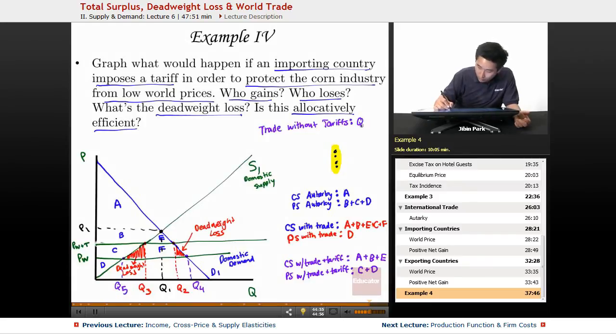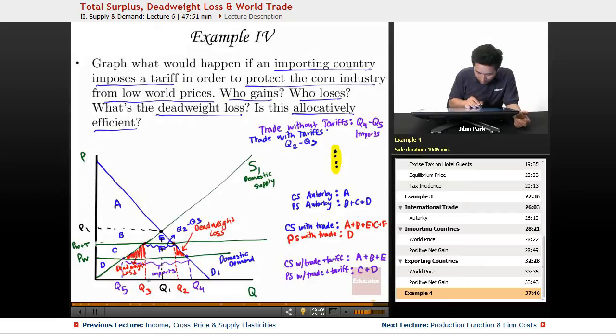So trade without tariff, actually this is Q5 right here, is this area here. Q4 minus Q5 here shown on the graph. So this is the amount of imports. Okay, so that's the amount of imports. So what ends up happening, trade with tariffs - now you have Q2 minus Q3. So this area here or this quantity here is a new amount of trade. So this area between Q4 and Q3, you lose that entire amount of trade with the tariff. And you also lose the Q2 between the Q2 and the Q4. So tariffs are definitely not allocatively efficient.